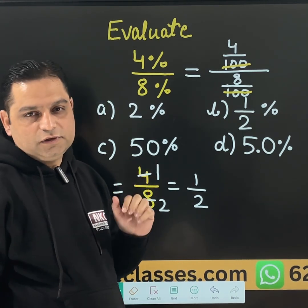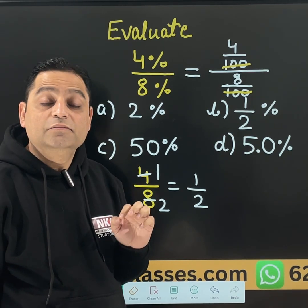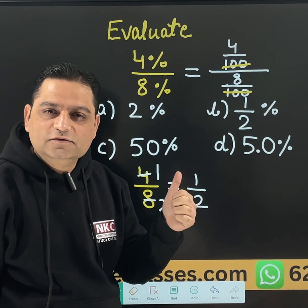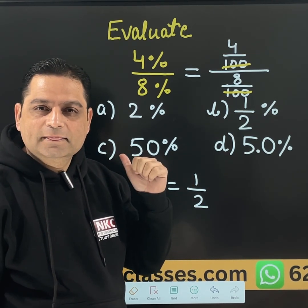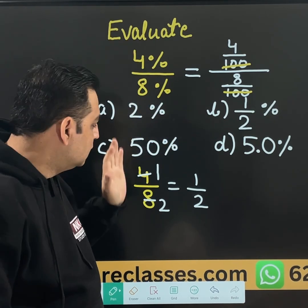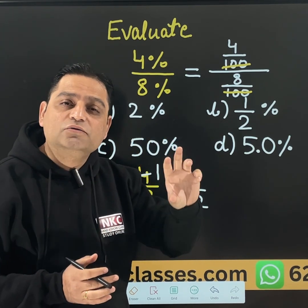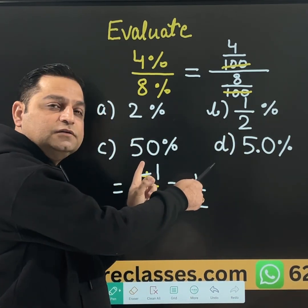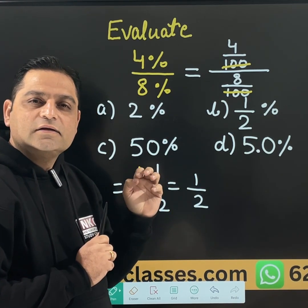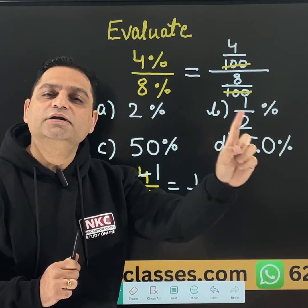Looking at 1 over 2, many people think that B option is the correct option. But do remember, this is only 1 over 2 — this is not 1 over 2%. That means after simplification of 4% over 8%, we are getting a simple fraction. Now come back to the percentage concept, because we have 4 options where everywhere a percent sign is there.